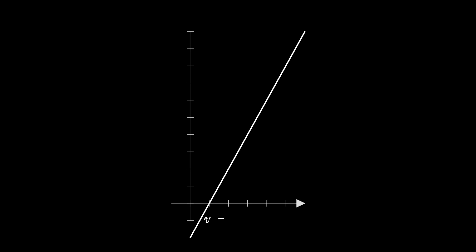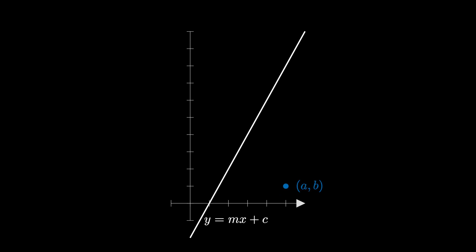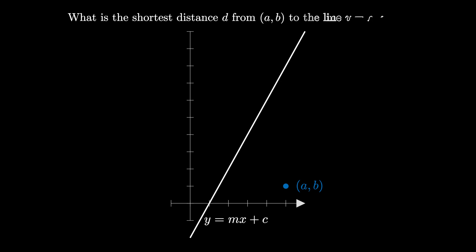Consider a line with equation y equals mx plus c and a point in the plane with coordinates a, b. What is the shortest distance d from the point a, b to the line y equals mx plus c? This means we're looking for the distance d of the line segment that is perpendicular to the given line and that connects that line to the point a, b.